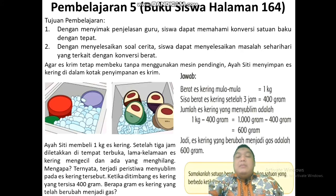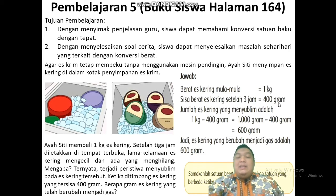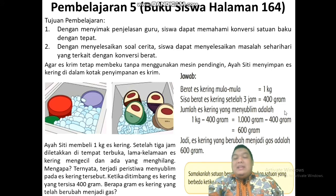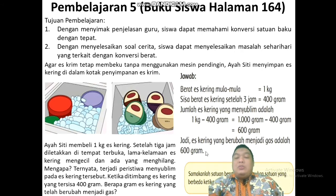Pak Guru sudah merangkumnya. Awalnya, berat es kering adalah 1 kilo. Sisa berat es kering setelah 3 jam menjadi 400 gram. Berarti pengurangan: jumlah es kering yang menyublim adalah 1 kilo dikurangi 400 gram. Satuannya belum sama, harus disamakan dulu — dirubah ke gram. 1 kilo dirubah ke gram: 1 kilo sama dengan 1000 gram. 400 gram tetap, tidak ada perubahan. Kalau satuan sudah sama, tinggal dikurangi: 1000 kurangi 400 sama dengan 600. Jadi, es kering yang berubah menjadi gas adalah 600 gram.